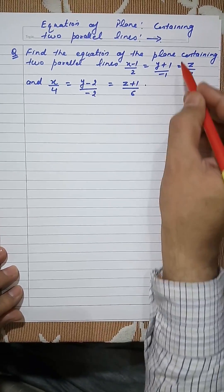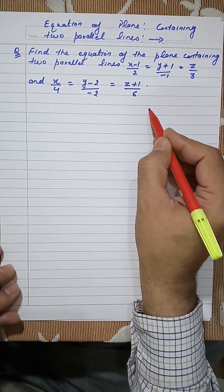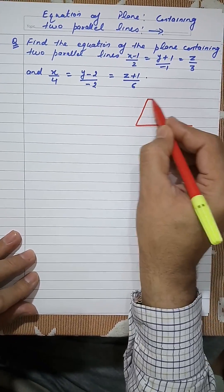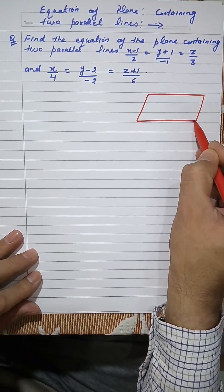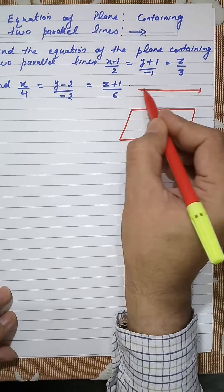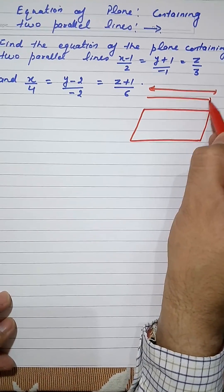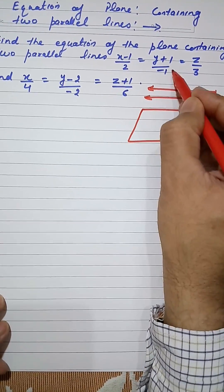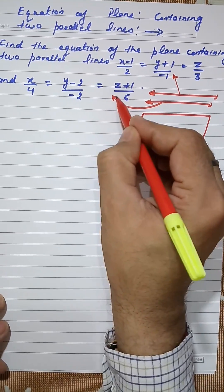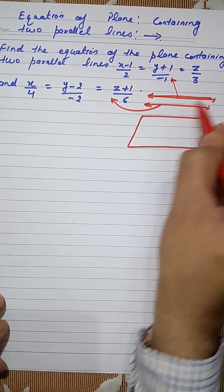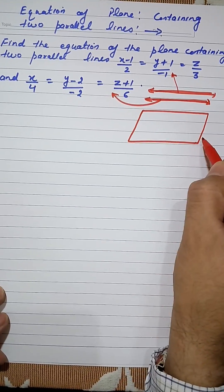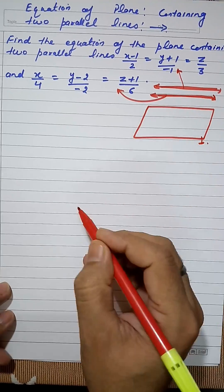Let us find out the equation of the plane. The equation of this plane is parallel to two given lines. These are the two given lines — the first line has one equation and the second line has another. Both lines are parallel to the plane, and we have to find out the equation of this plane.